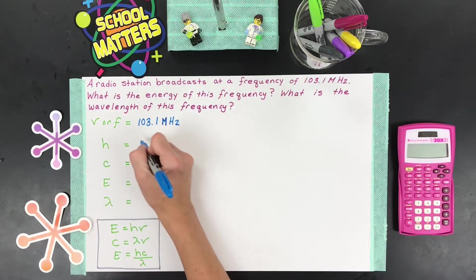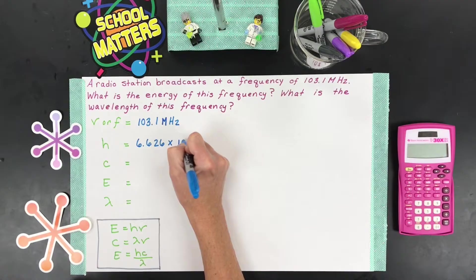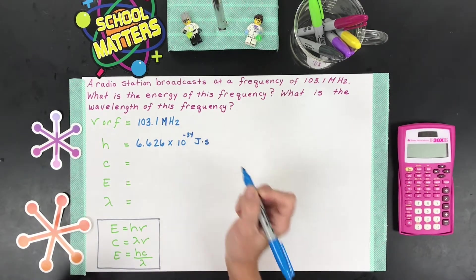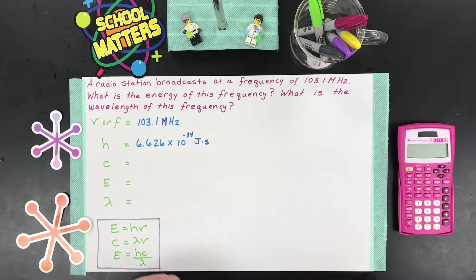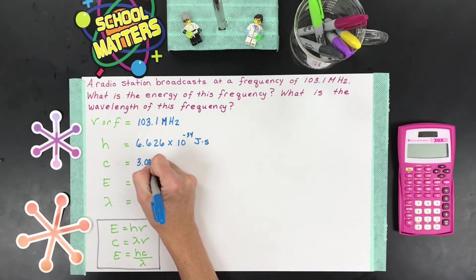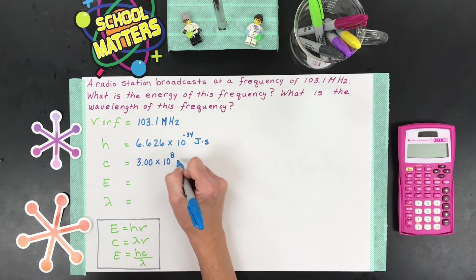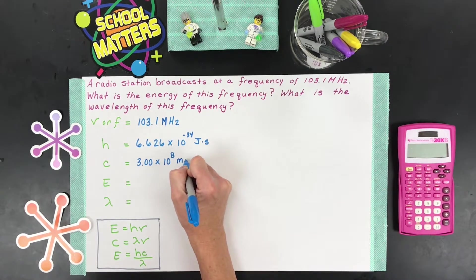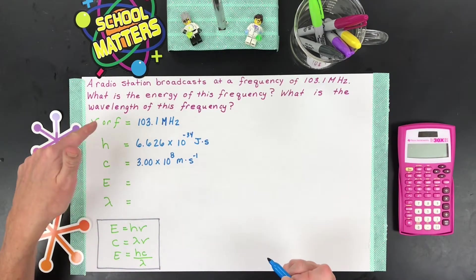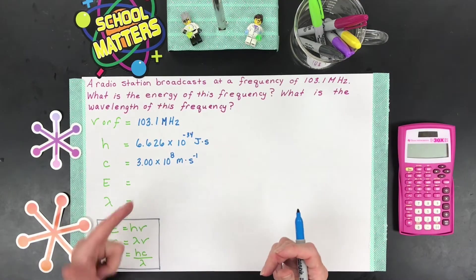H is Planck's constant, that's 6.626 times 10 to the negative 34th joules times seconds, so the tiny little packet of energy. Then, C is the speed of light. That means we can use this because any electromagnetic radiation, technically in a vacuum, will travel at the speed of light. And since a radio wave, this FM radio wave, is part of the electromagnetic spectrum, we can use this number.